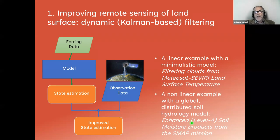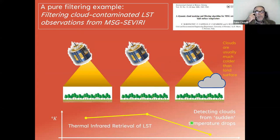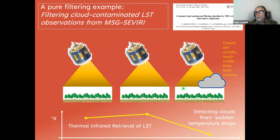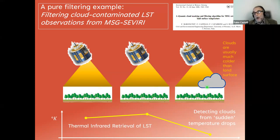The cloud filtering example with a linear model: the problem is that if you measure land surface temperature from a satellite — for example the SEVIRI sensor on board the Meteosat geostationary satellite — you intend to measure the amount of radiation emitted in the thermal infrared from the surface. But if clouds come into the field of view, what the satellite measures is not the temperature of the land surface but the temperature of the cloud. As you may know, clouds are usually much colder than the land surface, so the sensor will detect quite a colder temperature.